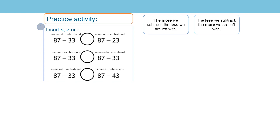Let's have a look at the first set of calculations. What do you notice about the calculations? The ones on the left hand side are all the same: 87 subtract 33. What do you notice about the ones on the right hand side? The subtrahend is increasing by 10 each time. We had the generalisation in the last session — the more we subtract, the less we are left with, and the less we subtract, the more we are left with.